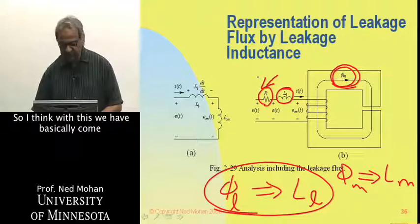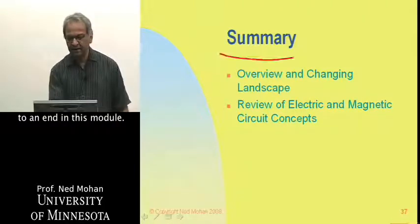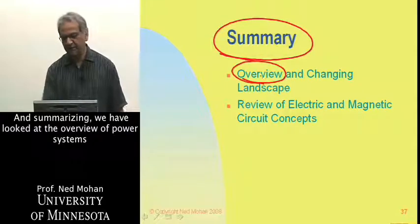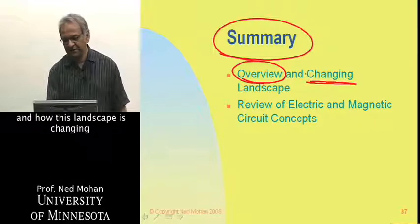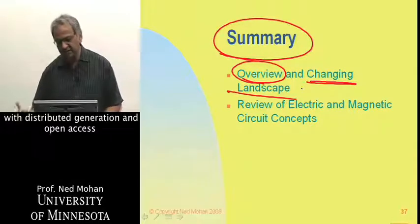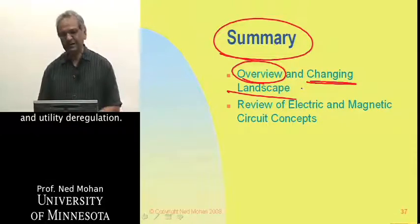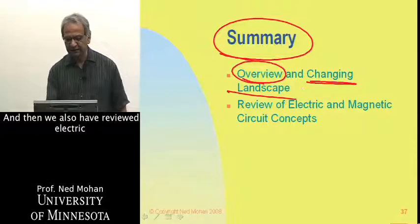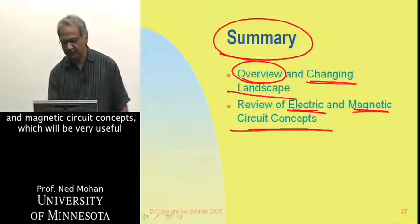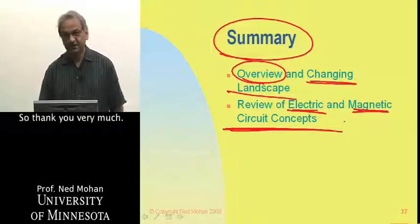With this, we have basically come to an end of this module. In summary, we have looked at the overview of power systems and how the landscape is changing with distributed generation, open access, and utility deregulation. We have also reviewed electric and magnetic circuit concepts, which will be very useful when we come to later modules. Thank you very much.